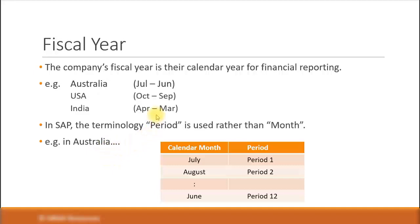For example, if you are in Australia, your fiscal year starts from July to June. So July is your period 1, August is your period 2, and all the way through to June which is your period 12. That is the link between your calendar month and period, and this is derived from your country's financial year. There is a configuration setting done at the back end where the financial year is assigned to your company code. So whenever you do a financial posting, you just specify the standard dates and the system will automatically derive the relevant period.